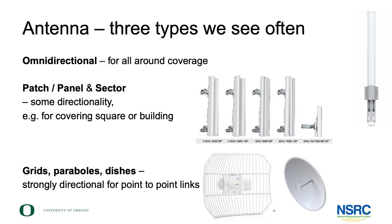An antenna is probably the most important part of making a wireless connection. The three main types you'll be seeing are omnidirectional, patch and sector, and highly directional antennas.